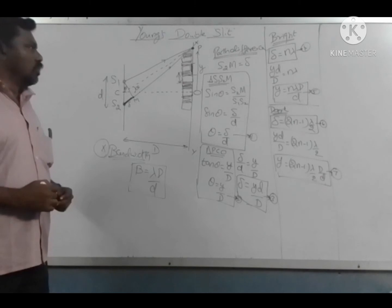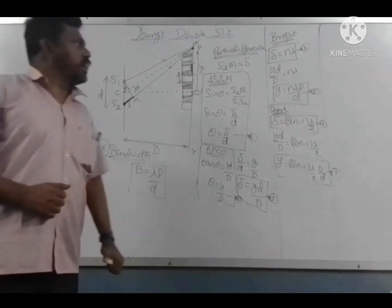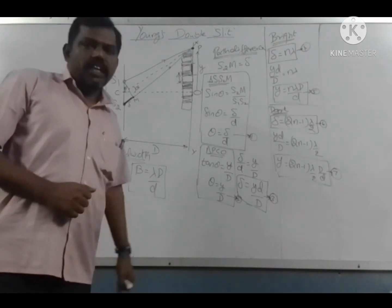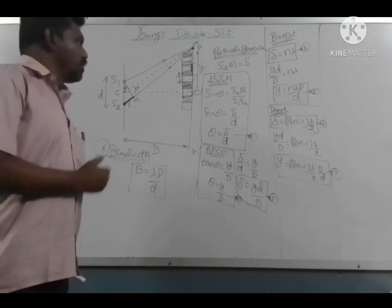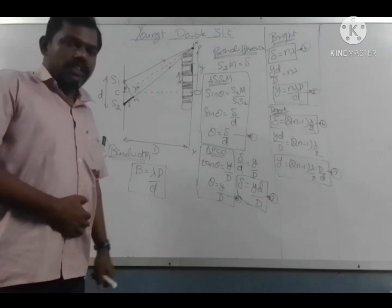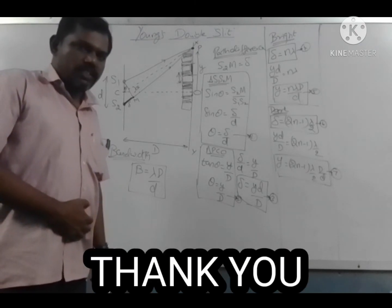We have discussed Young's Double Slit Experiment from unit 7, topic interference. Thank you.